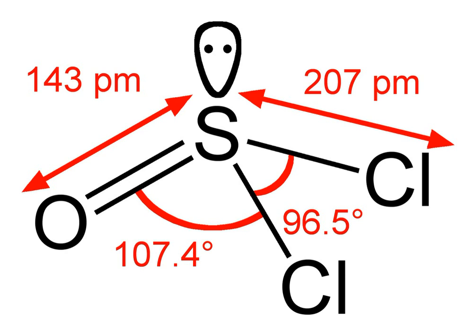Historically the use of SOCl2 in combination with a tertiary amine such as pyridine was called the Darzens halogenation, but this name is rarely used by modern chemists.